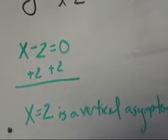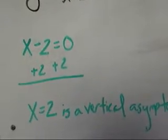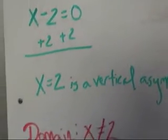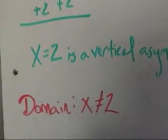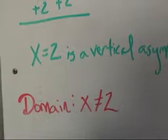When I graph this, I will graph it as a broken or dashed line. This also tells me that for the domain, x can be any value except for 2.